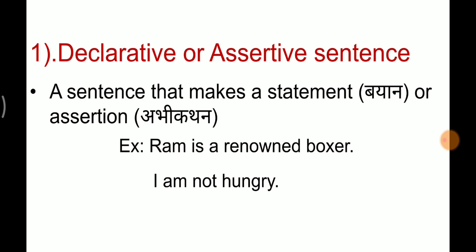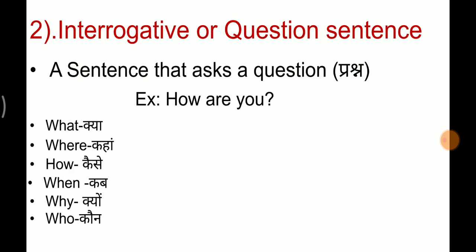The next type is the interrogative or question sentence — a sentence that asks a question. It's very simple. If there is any group of words arranged in a pattern where you ask a question, we call it an interrogative or question sentence. For example: 'How are you?'